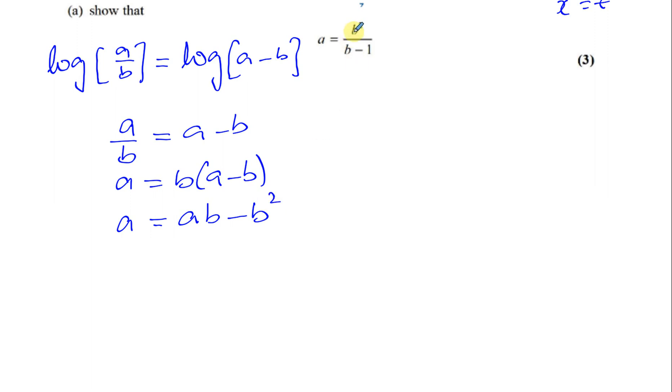The B squared is positive in our answer. So, let's add B squared to both sides and take away A from both sides. So, we've got A B minus A equals B squared. We can take our A as common. A times B minus 1 equals B squared.